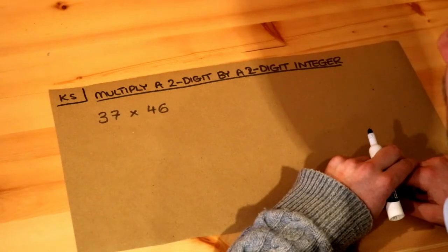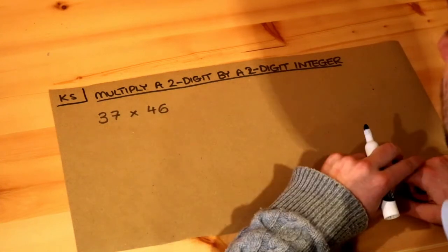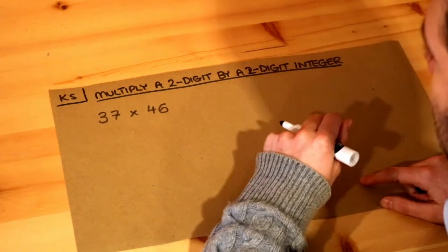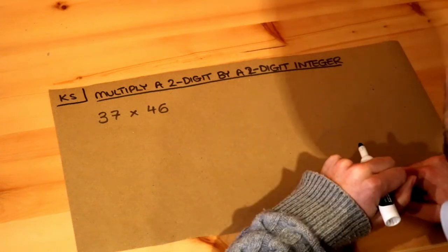We previously saw how to do a two-digit number multiplied by a one-digit number. It's a very similar method here, but we're going to have to do a little bit extra.